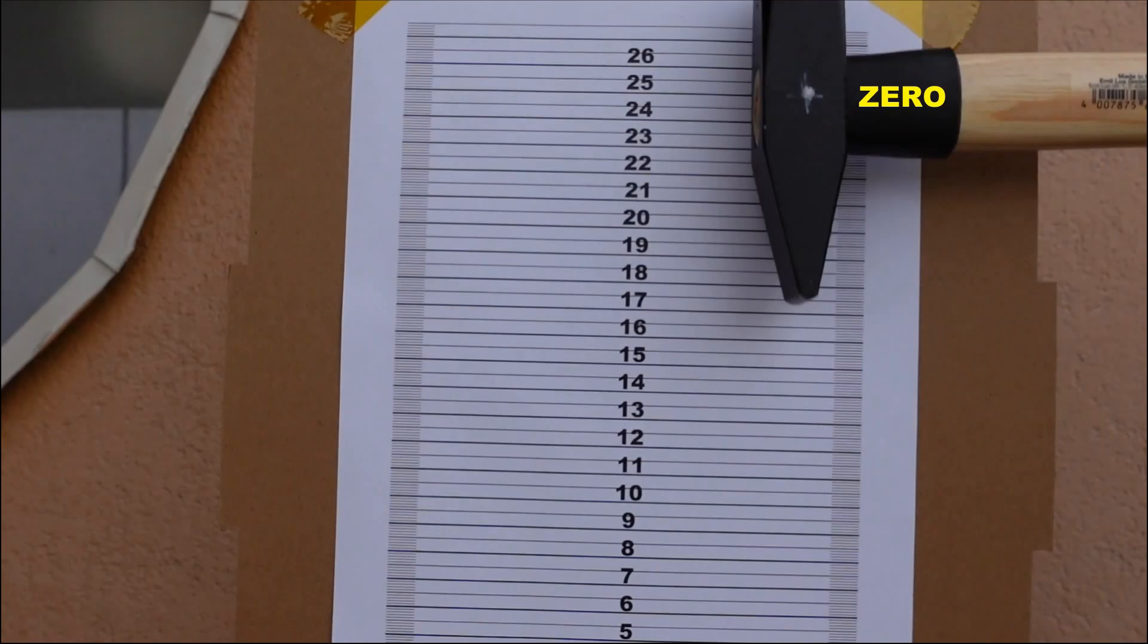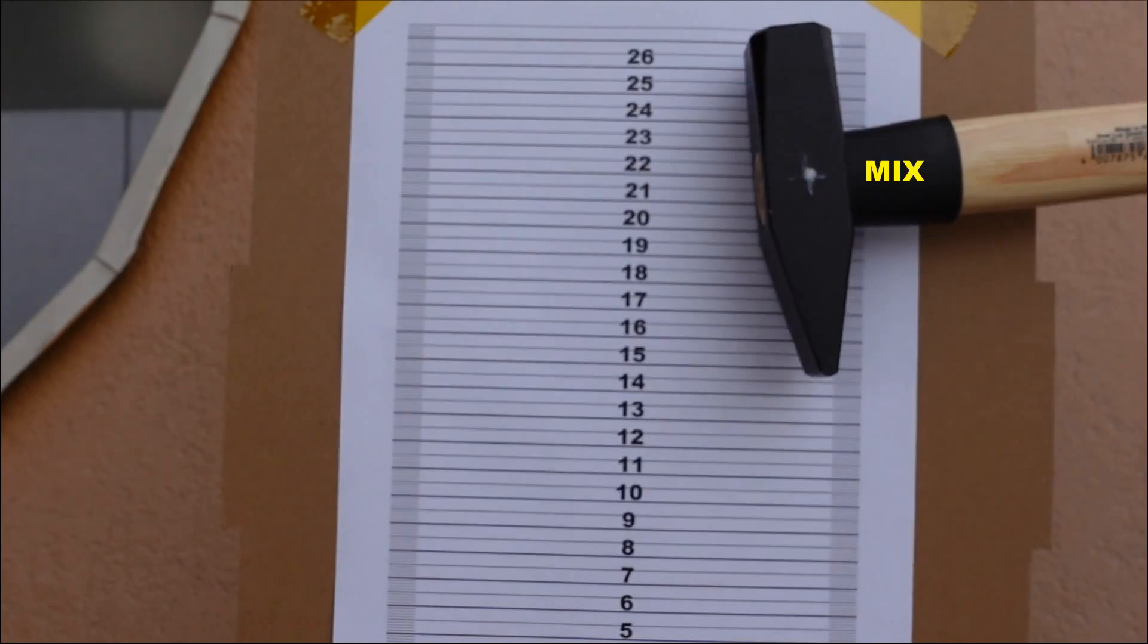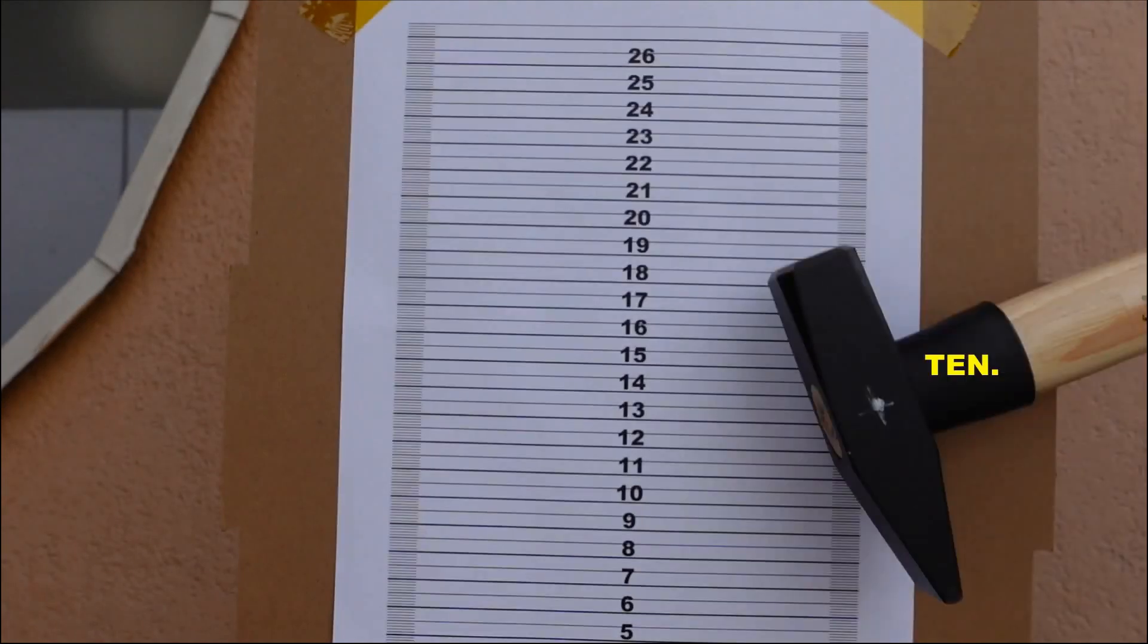This is the scale, and this is the position of the hammer when there was no test specimens - the zero position. And this is after breaking the Blue sample, this is the 50-50% mixture, and this is after breaking the Tenacious resin.